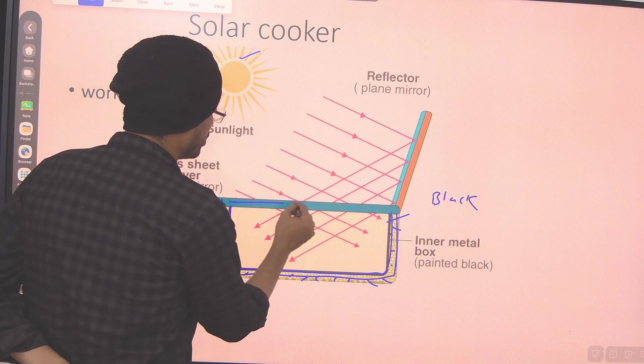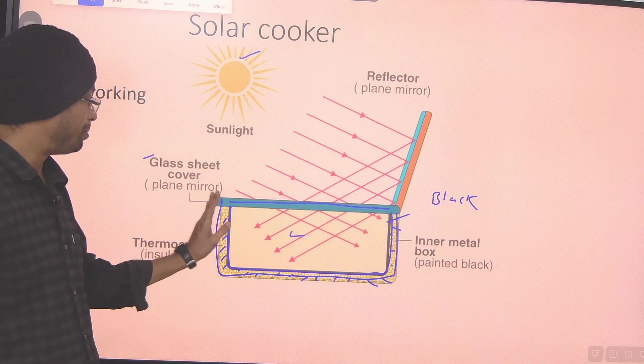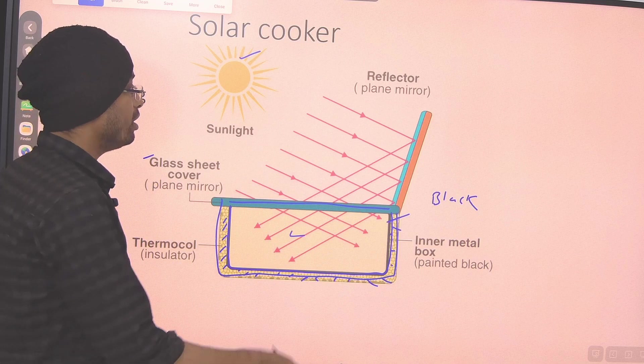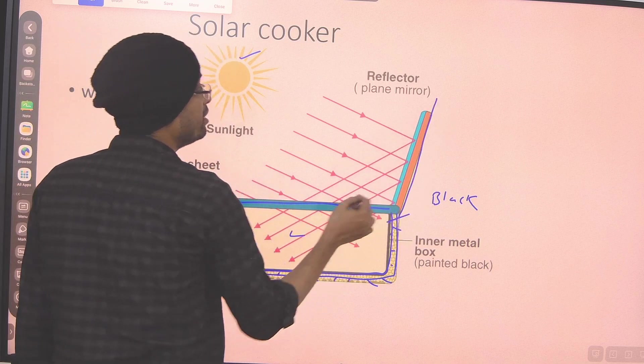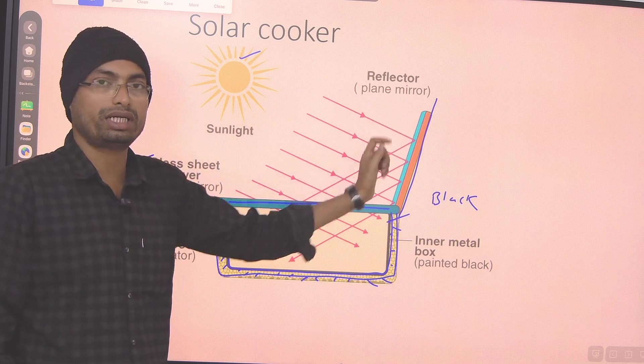Now, we put a glass slab on it, or a glass sheet on it. It's a plane mirror. It is a plane mirror, a glass layer. And then this is what we see on top. Now, this is a reflector. We also use a plane mirror in the reflector.